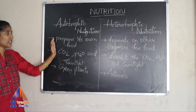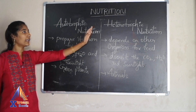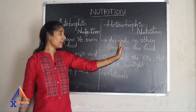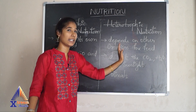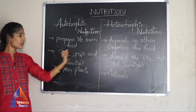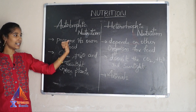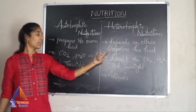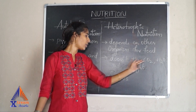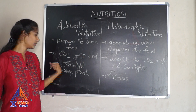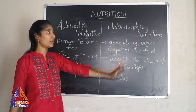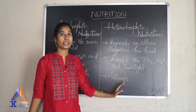To summarize: autotrophic nutrition means the organism prepares its own food, utilizing carbon dioxide, water, and sunlight. Heterotrophic nutrition means the organism depends on another organism for food and does not depend on carbon dioxide, water, and sunlight. The example of autotrophic nutrition is green plants, and the example of heterotrophic nutrition is animals.